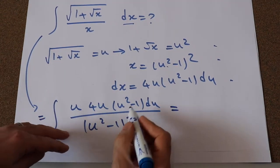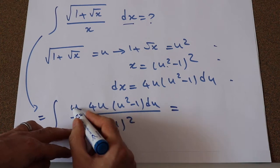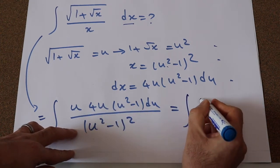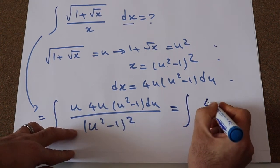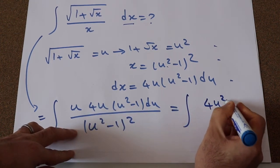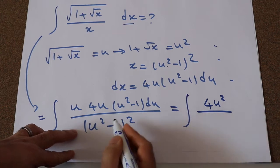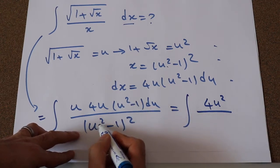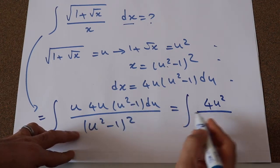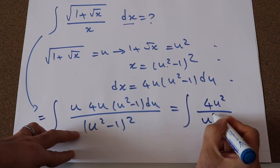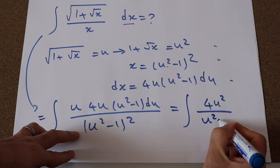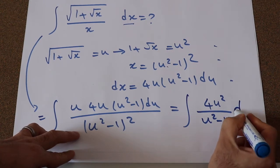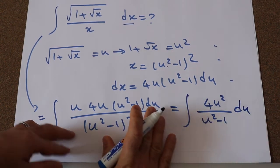Therefore, this one will be equal to 4 times u times u, that is 4u squared, divided by (u squared minus 1) squared. Therefore, this simplifies to (u squared minus 1) du.